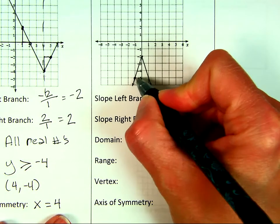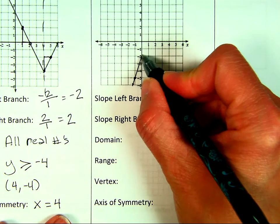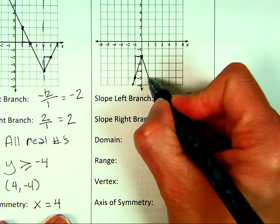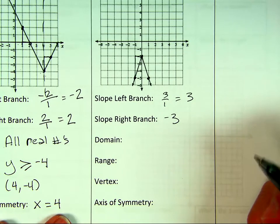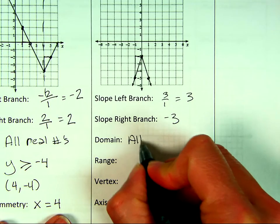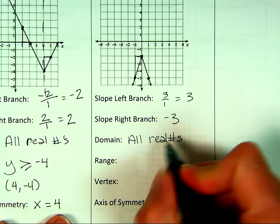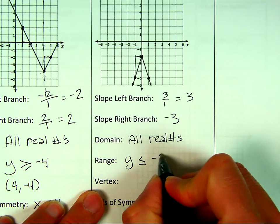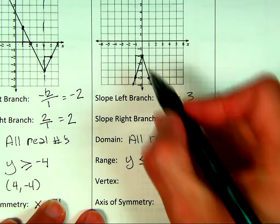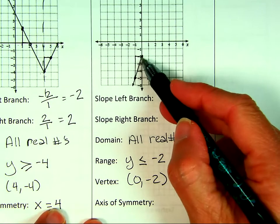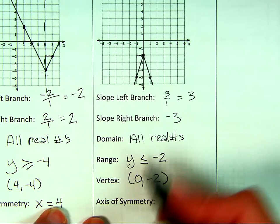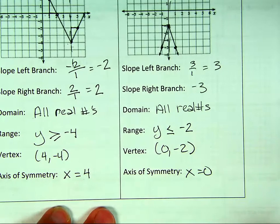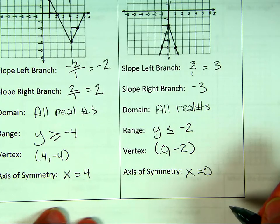This second graph is upside down. Pick two points where the graph crosses the grid marks — up three over one gives a slope of three on the left side. On the right side, it's down three right one, so that's negative three. Domain is all real numbers. The highest point is negative two, so the range is y is less than or equal to negative two. The vertex is (0, −2), and the axis of symmetry is x equals zero — always the x-coordinate of the vertex.